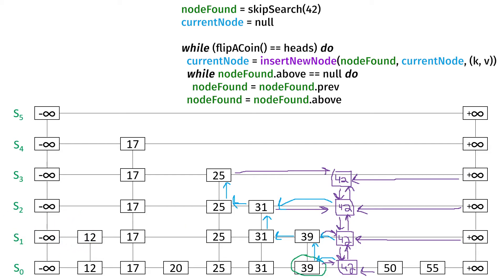That's how you insert a node into a skip list. To recap: we search for the node with the largest key less than or equal to what we're trying to add, then insert the new node after it. We keep flipping a coin until we get tails, and keep adding to the tower. The whole time, you just have to manipulate references.